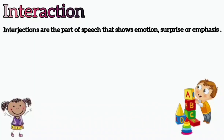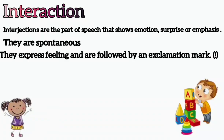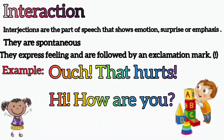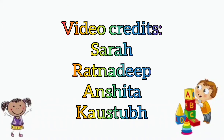The next part of speech is interjections. Interjections are the part of speech that shows emotion, surprise, or emphasis. They are spontaneous, express feeling, and are followed by an exclamation mark. For example, 'Ouch! That hurts.' Here 'ouch' is the interjection. 'Hi! How are you?' Here 'hi' is the interjection. So these are the eight parts of speech in English grammar.